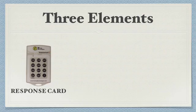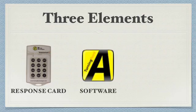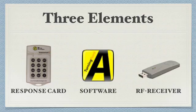So, as you can see, these three main elements — response cards, software, and RF receiver — work together to make audience response systems function. There are lots of other things that our technicians do to make audience response systems work.